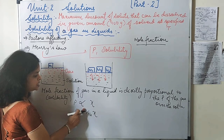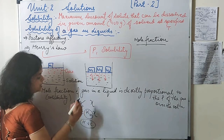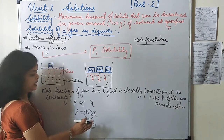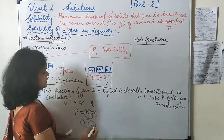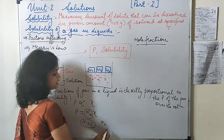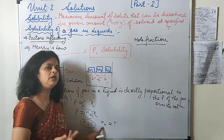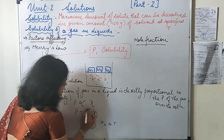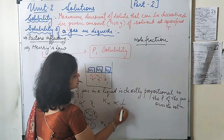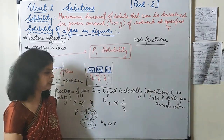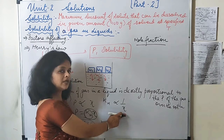To remove the proportionality sign, we put a constant called Henry's Law constant K_H. This constant depends on the nature of the gas. By experimental values it is observed that the K_H value is directly proportional to temperature — if temperature increases, K_H increases. Also, K_H is inversely proportional to the mole fraction of the gas in solution.